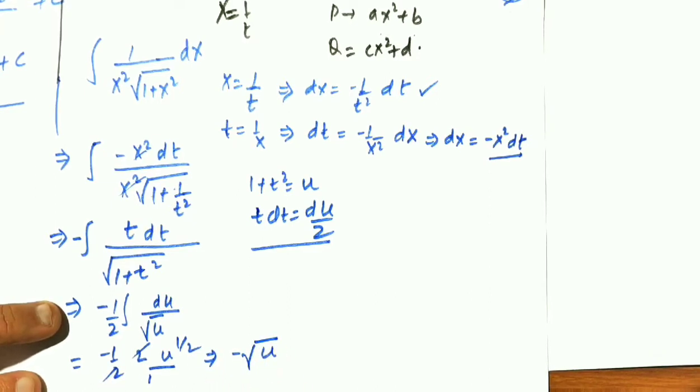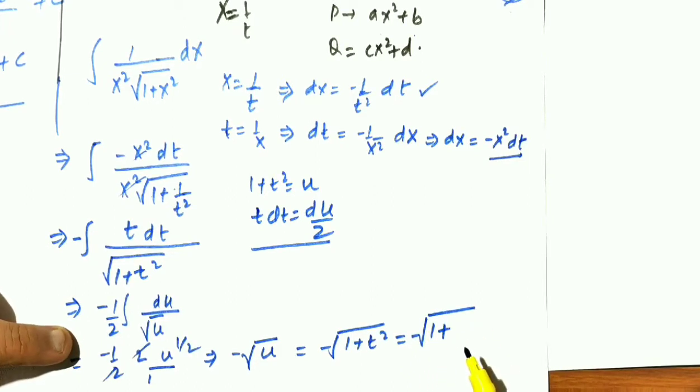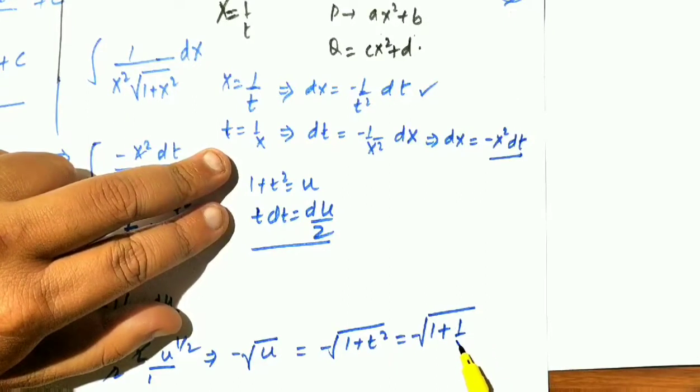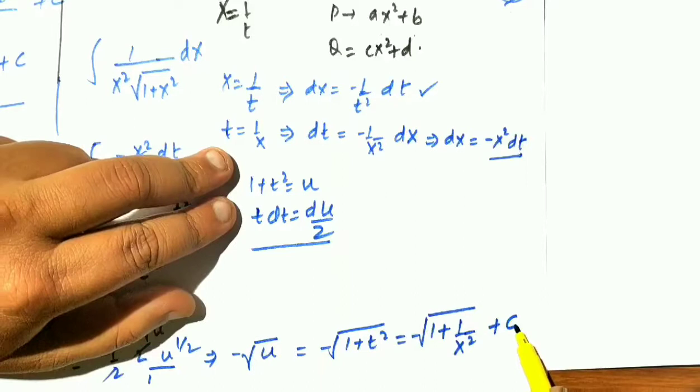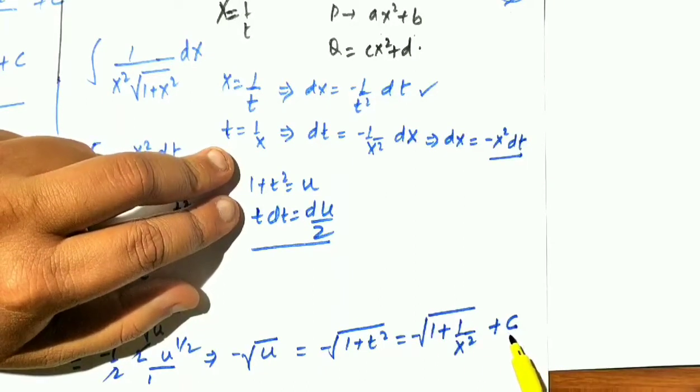And you know what is u. So my u is negative of 1 plus t square. And what is t square? It is negative of 1 plus, t is 1 over x, therefore 1 by x square, plus a constant of integration.